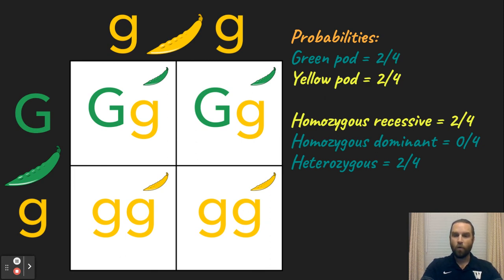There's also the terms like homozygous recessive. That means two lowercase letters. That's two out of four. What's the possibility that these parents give you a homozygous dominant? That would be zero out of four because I don't see any squares that have two capital G's.